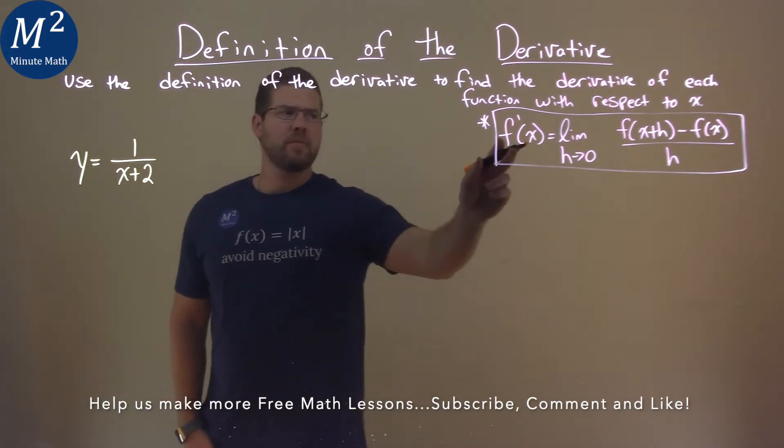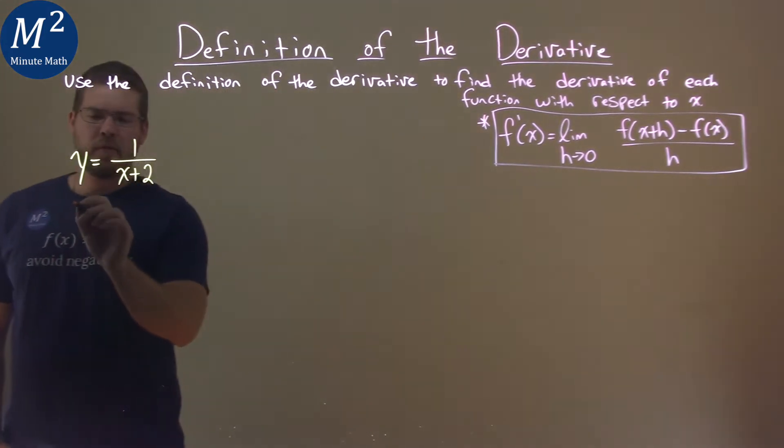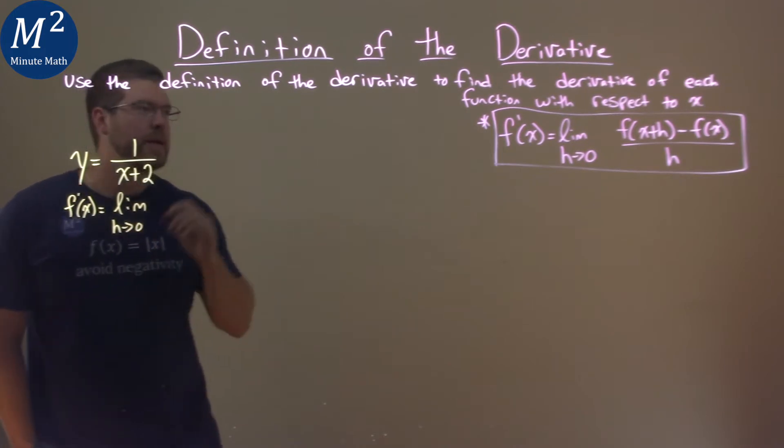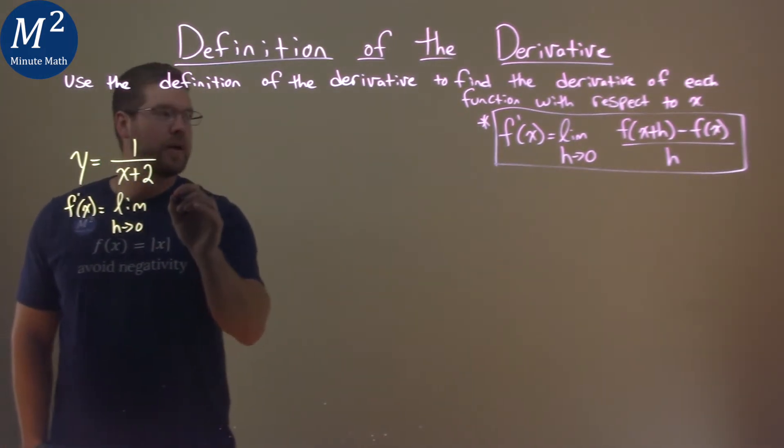Now, our definition right here tells us that we can write f prime of x or y prime is equal to the limit as h approaches 0 of our function, and we're going to put x plus h in for x.